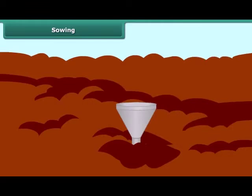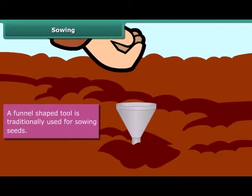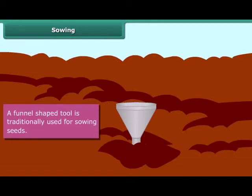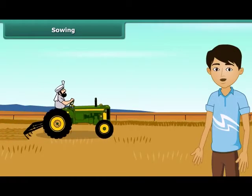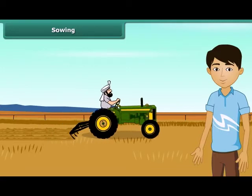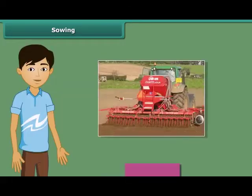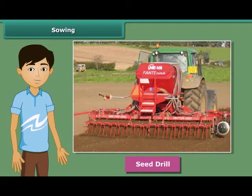Now let us see what tools are used for sowing seeds. Look at this farmer — he has a funnel-shaped tool for sowing seeds. He is filling seeds into the funnel and passing them down through the sharp ends of the pipe to get them seeded in the soil. This is a traditional method and very easy. Nowadays, farmers use modern seed drills for sowing with the help of tractors. It sows the seeds uniformly at proper distance and depth, ensuring that seeds get covered by the soil after sowing. This process also saves a lot of time and labor.